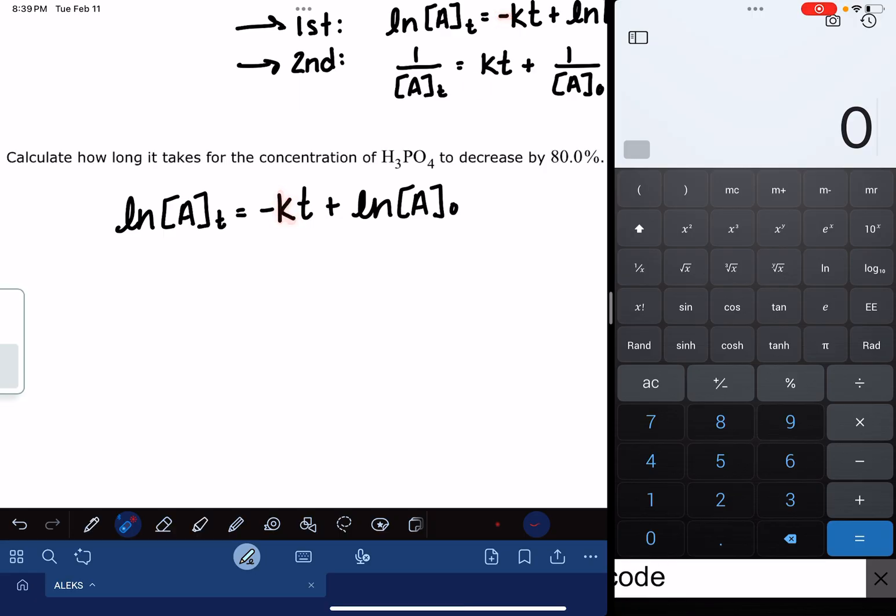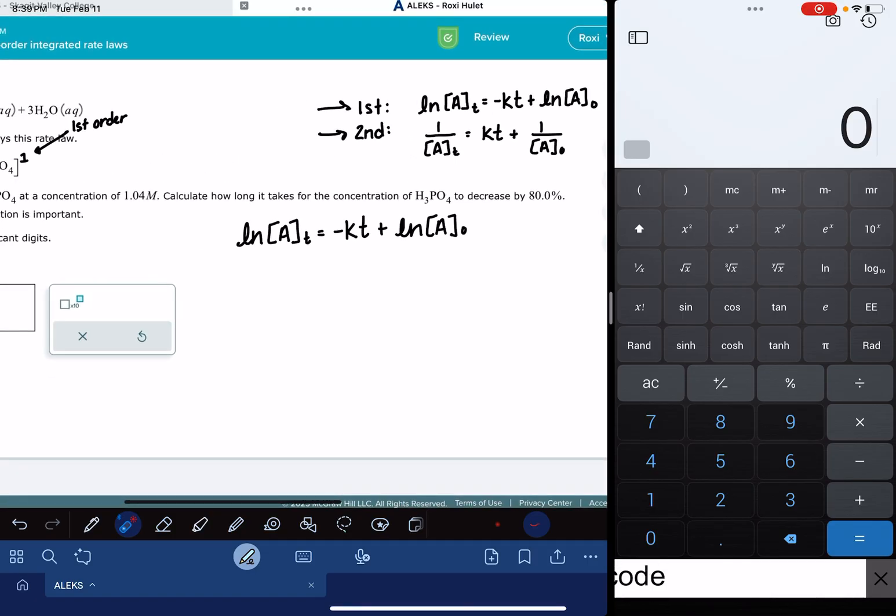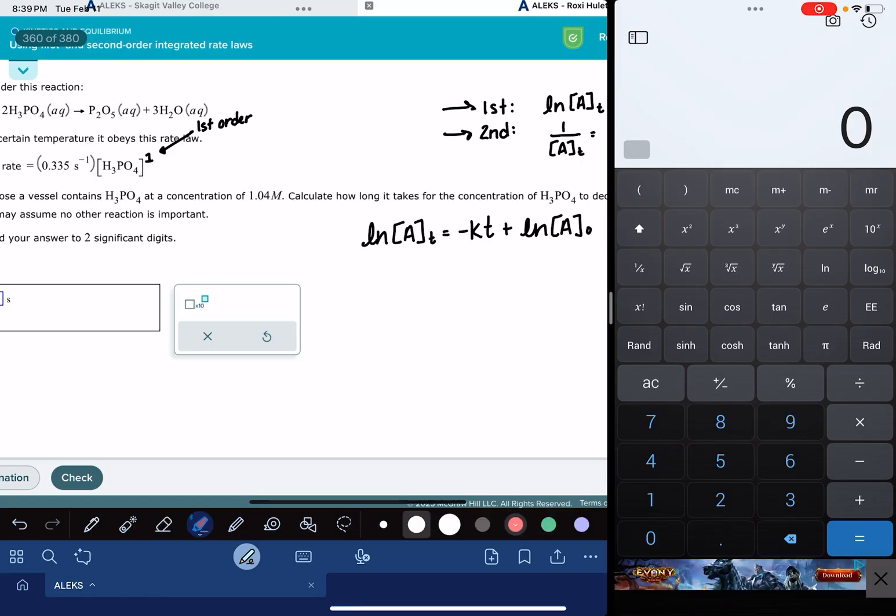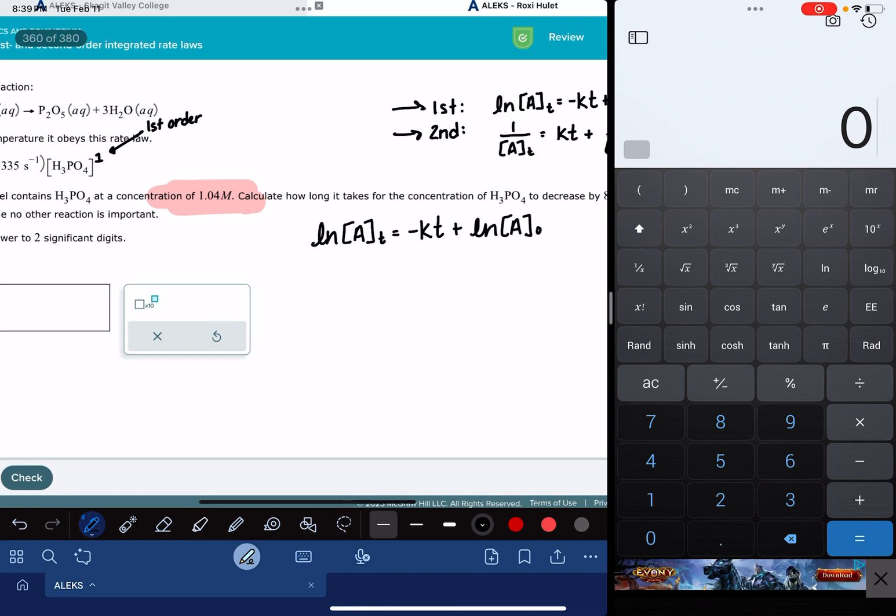That A is just a generic term indicating whatever reactant you have in your reaction. So this is saying the concentration of A after a certain amount of time has passed. And then you have lowercase k, might be negative, might not be negative. You have lowercase k, and that's the rate constant. You have T, some specific amount of time. And every version of the problem that I saw, ALEKS is actually asking us to solve for T. And then we also have the concentration of A at time zero, so this is our initial concentration of A. Now, every version of the problem that I looked at, it gave the initial concentration of A. For me, it says the vessel contains 1.04 molar. That is my A at time zero.